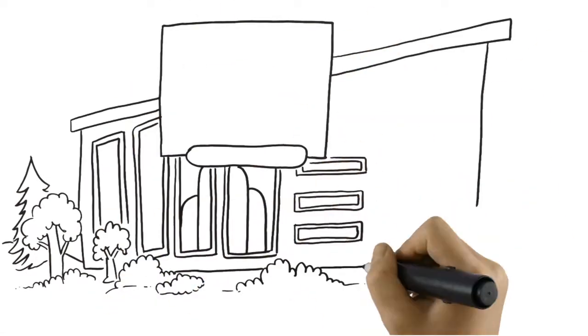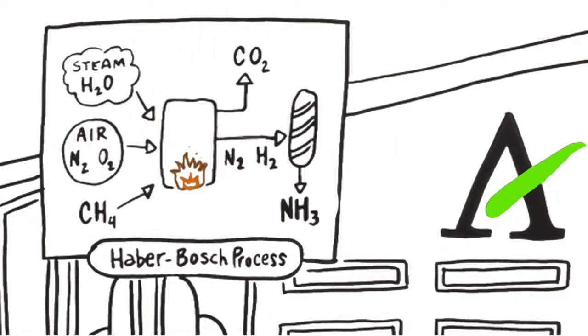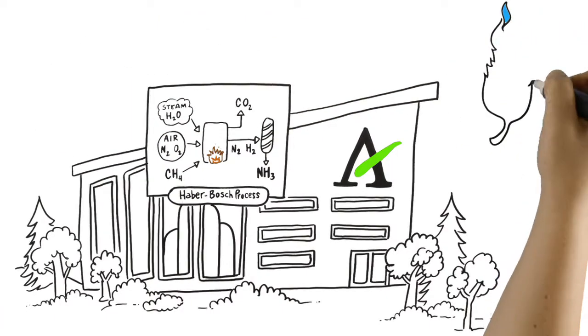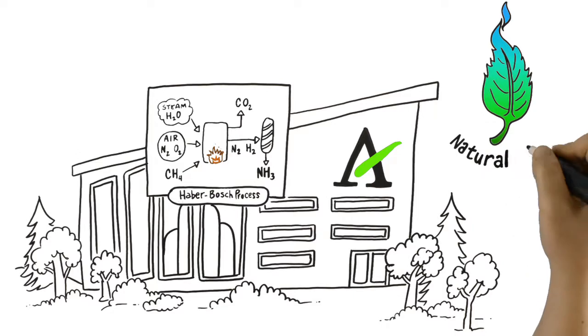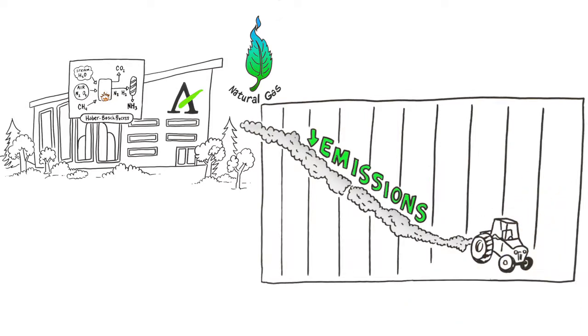Most of our greenhouse gas emissions occur in our nitrogen production facilities, where we produce ammonia from hydrogen. To limit this, we use natural gas as a feedstock and have taken early action to improve our production efficiency. In fact, we're now approaching the maximum reductions possible using current technology.